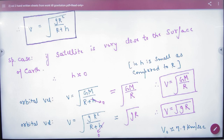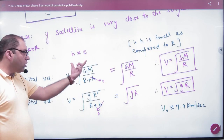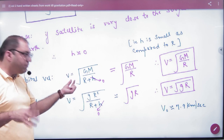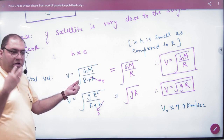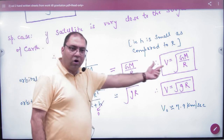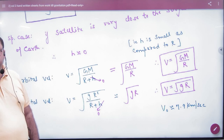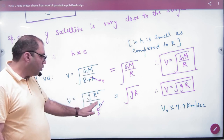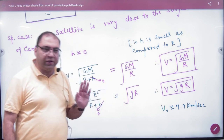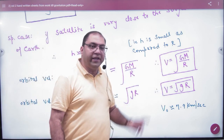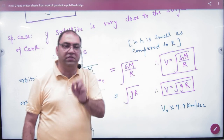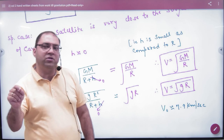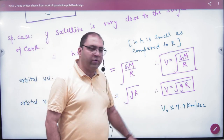Sometimes a satellite is close to the surface of the Earth. In such a case, H is very small compared to R and can be neglected, giving an approximate velocity. The orbital velocity for satellites close to the surface of the Earth becomes V = √(gR). If you put in the values, the approximate orbital velocity is 7.9 km per second.